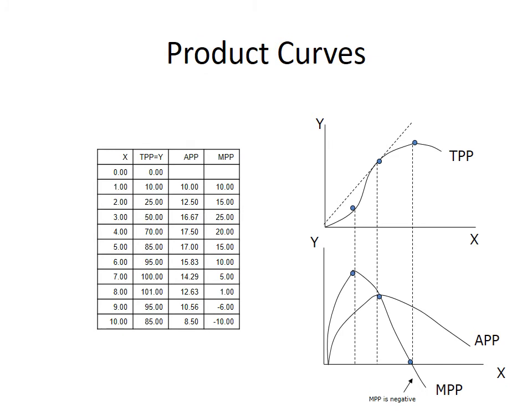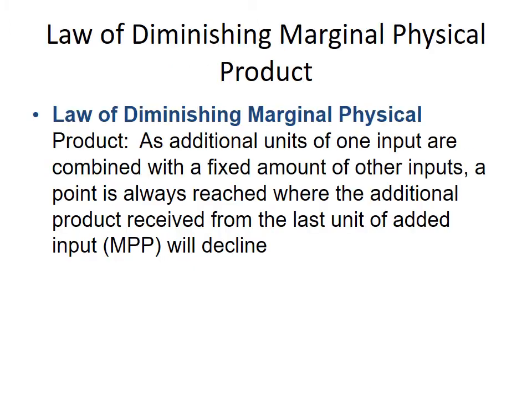In the second lecture of this week, we discussed what product curves are — what the TPP curve, APP curve, and MPP curve are. We took x input, i.e., labor inputs, and the corresponding y output. From any firm's data, we can derive APP and MPP. When you plot these on a graph, a key relation is visible: where TPP is maximum, MPP is zero, and after that point, MPP becomes negative and output starts to decline.